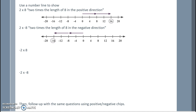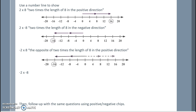Negative 2 times 8: the opposite of 2 times the length of 8 in the positive direction. So we would originally think this would be 2 copies of 8 in the positive direction, but then the negative part comes and that means we have to swing it to the opposite direction. So negative 16.